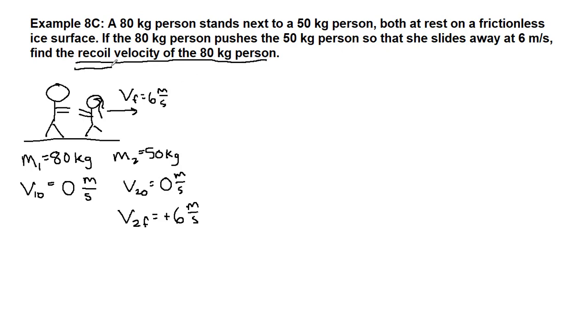This word recoil simply means that they weren't moving before, and if one object moves to the right, the other object is going to have to move to the left in order to balance the momentum. We kind of know about that backwards motion, and that's all the recoil is trying to indicate to us. So our unknown is V1 final.